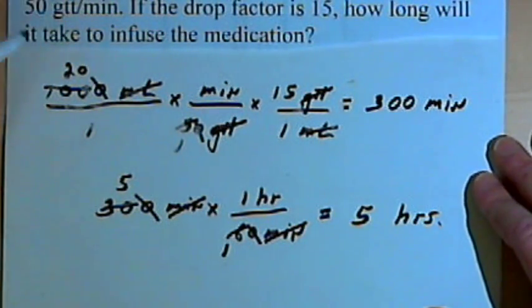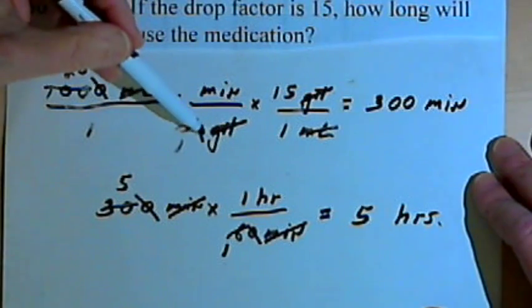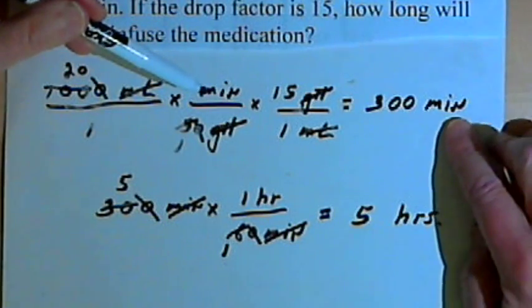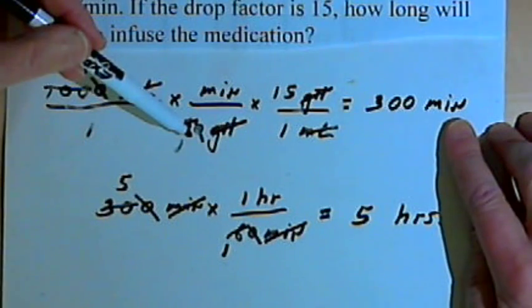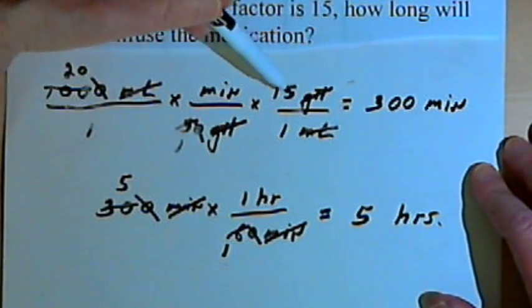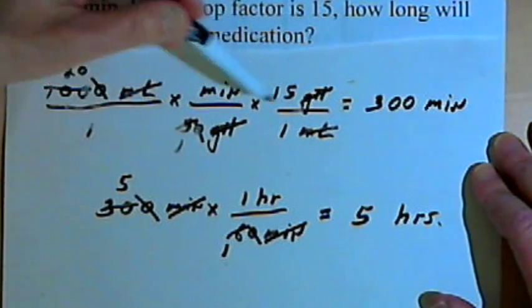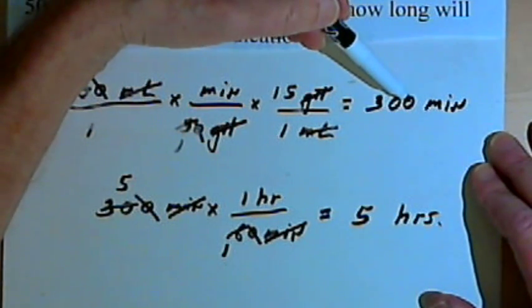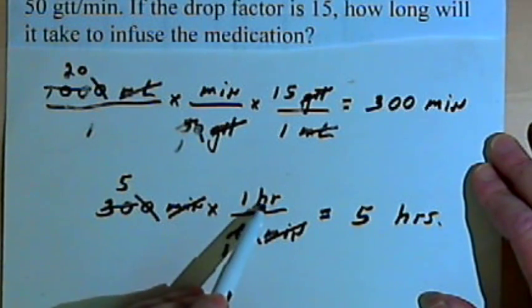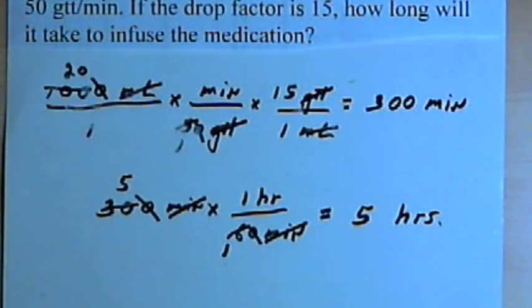So just to review quickly what I did, I started out with the amount of medication that was ordered. I took the rate that we're infusing it at, 50 drops per minute, and I put the minutes in the numerator so I would end up with minutes, the drops in the denominator. And then I was given a drop factor also. So I've got to multiply by the drop factor, which would have been 15 gtt, or 15 drops per milliliter. I cancel out whatever units I can, multiply across, I ended up with 300 minutes. Since that's a large number of minutes, I wanted to convert it into hours, so I used the conversion from minutes to hours, and I ended up with 5 hours. Okay, so that's about it. Take care. I'll see you next time.